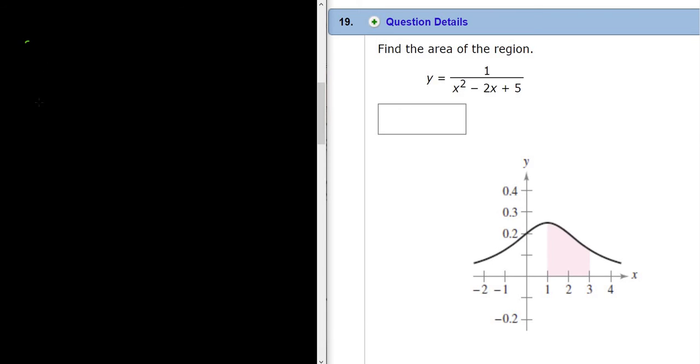So let's go ahead and do that. So we have the definite integral from 1 to 3 of 1 over x squared minus 2x plus 5 dx.